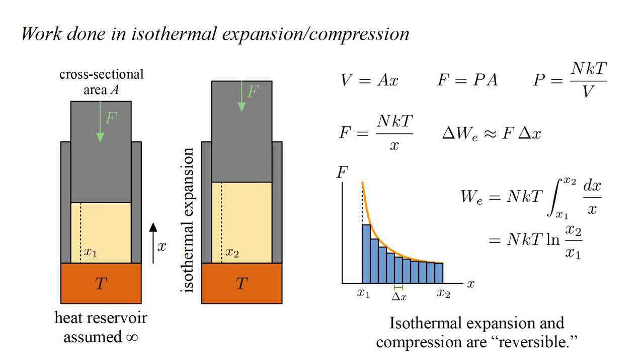Instead of expanding from X1 to X2, we can push down on the piston and compress the gas from X2 back to X1. The same expression now represents the work done on the system. Everything returns to its original state, leaving no trace of the expansion compression cycle. We say that isothermal expansion and compression are reversible.